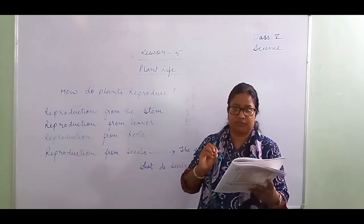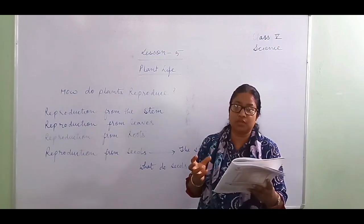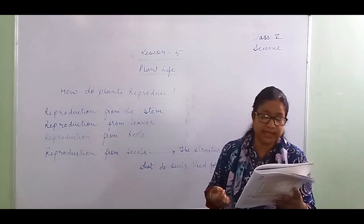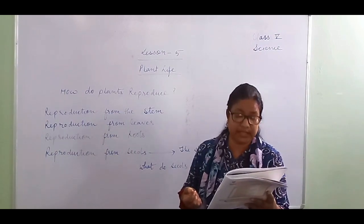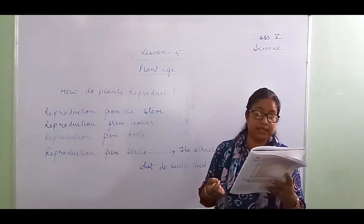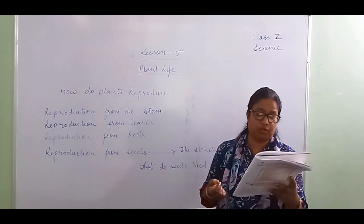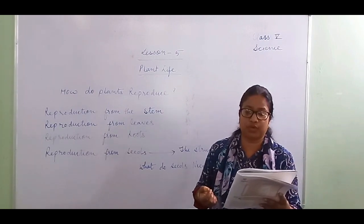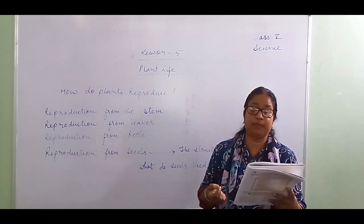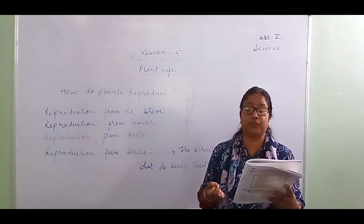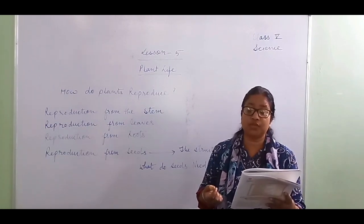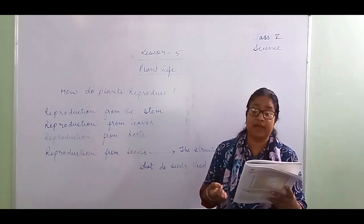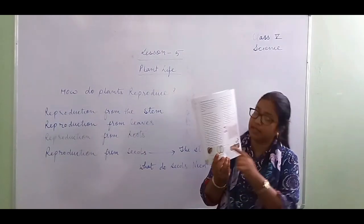Carefully remove the seed coat. This seed has two seed leaves called cotyledons. Between the cotyledons is the baby plant called the embryo. The embryo contains baby shoots and a baby root. The seed leaves protect the baby plant and also store food for it. Some seeds, such as corn, have only one cotyledon.